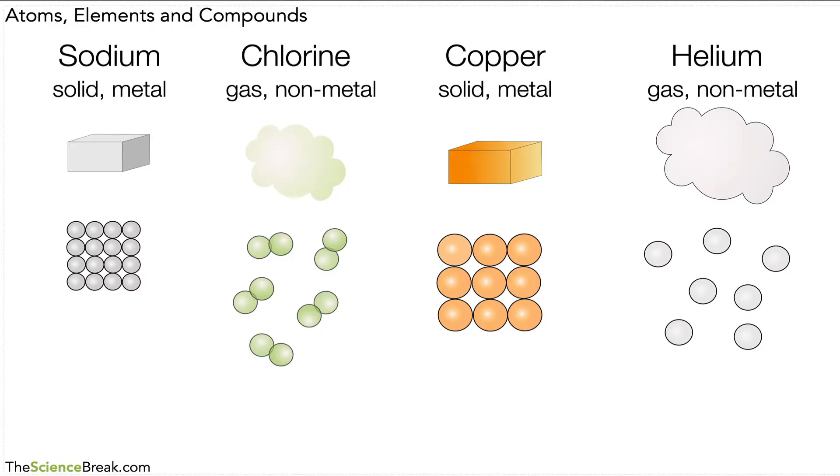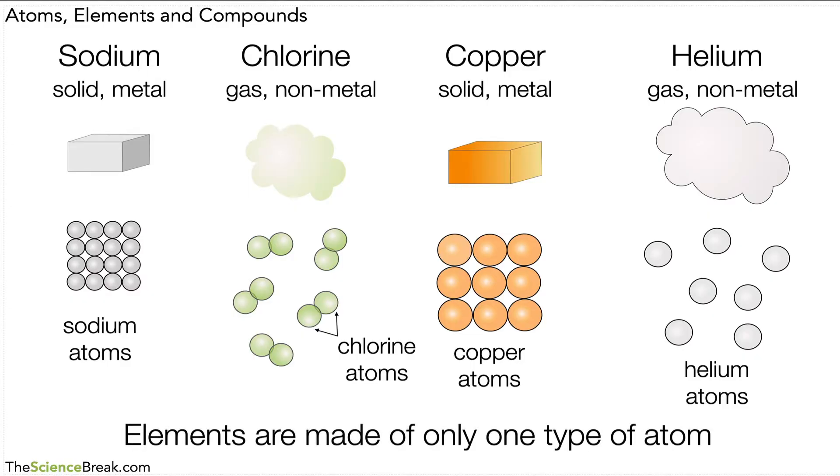So you can see on the left there we've got sodium metal made of sodium atoms. Chlorine gas is made of chlorine atoms and you can see they're found in pairs, that's how they're found in chlorine gas. Then we have copper which we have made of copper atoms and helium gas which is made of helium atoms. So the key point to remember here is that all of the elements are made of only one type of atom. Elements are made of only one type of atom. I've used a color code here just to show colors, but atoms are actually not different colors.